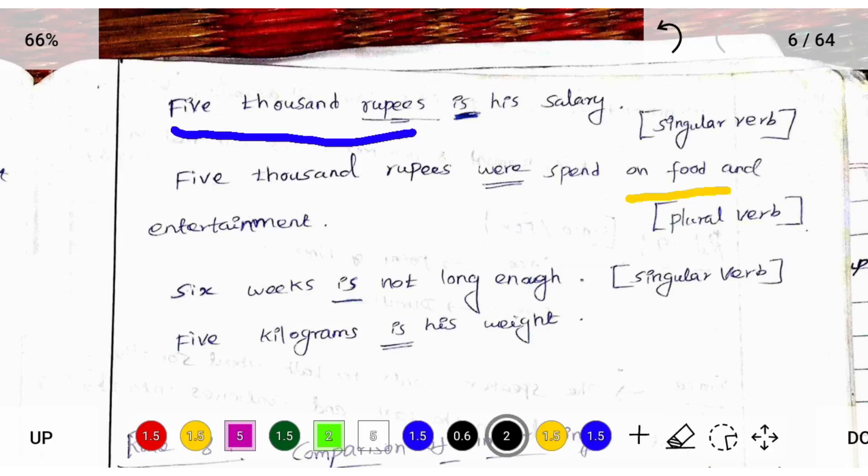5,000 rupees were spent on food and entertainment. 5,000 rupees spent on two ways, for food and entertainment. So here we use plural verb were.